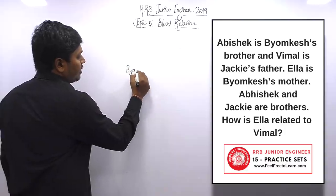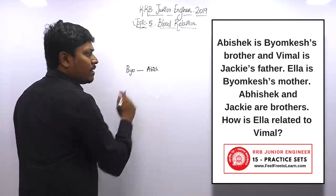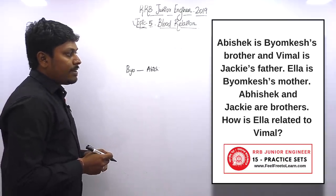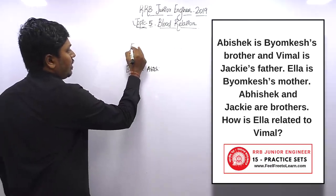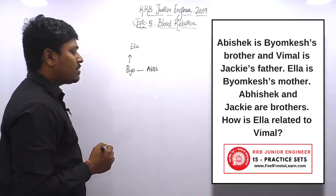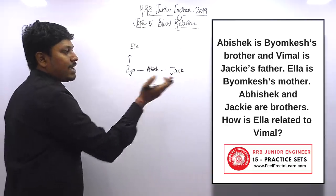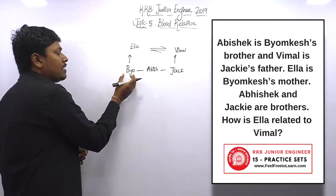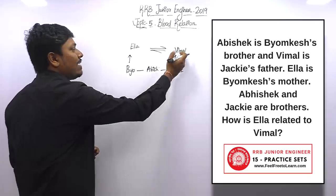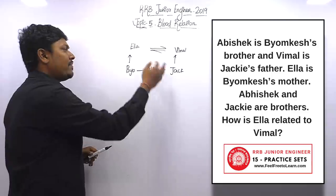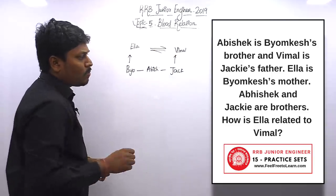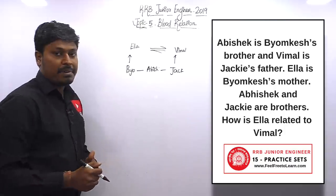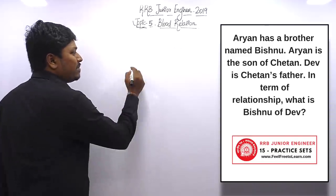Question number eighteen: Abhishek is Yomkesh's brother. Vimal is Jack's father. Elah is Yomkesh's mother. Abhishek is Jack's brother — so Jack and Yomkesh are brothers. Since Yomkesh calls Elah his mother and Jack calls Vimal his father, and they are brothers, Elah and Vimal must be a married couple. The question is: how is Elah related to Vimal? The answer is husband and wife.